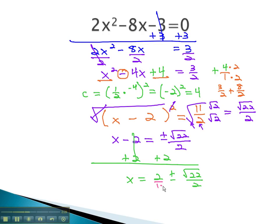Let's get a common denominator by multiplying the top and bottom by 2. 2 times 2 is 4, plus or minus the square root of 22 over the common denominator of 2.